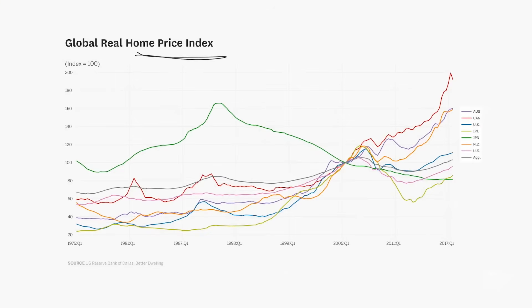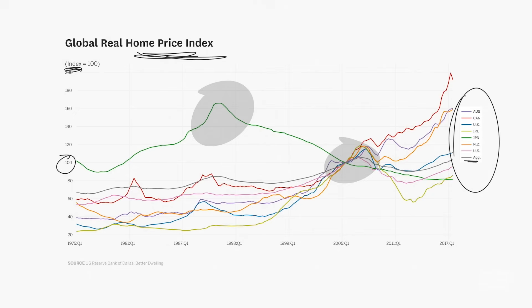Now we're back with a chart. This is the Global Real Home Price Index. The index is 100, and you see a bunch of lines for countries. There's a gray line in there that's the aggregate as well. This chart is really showing home prices in a lot of different places in the world. I obviously noticed that big hump on the green line — that's Japan — and I noticed that point where everything comes together. To me, those are probably two places where there's conflict.